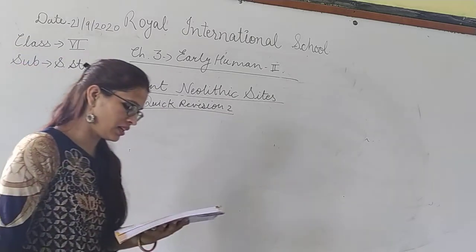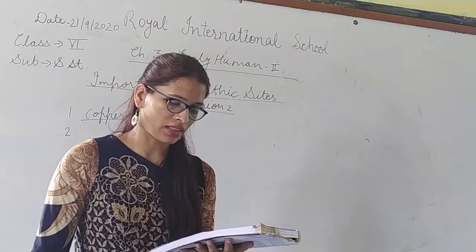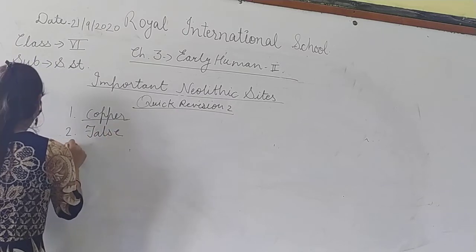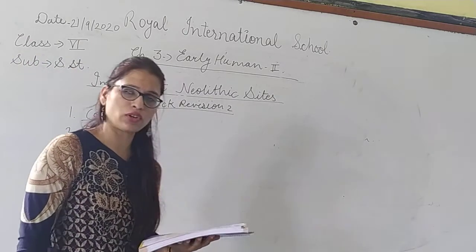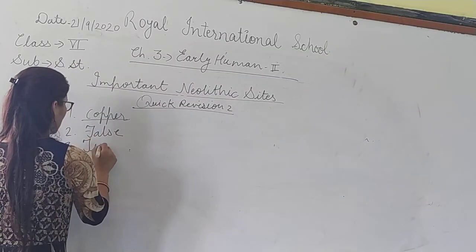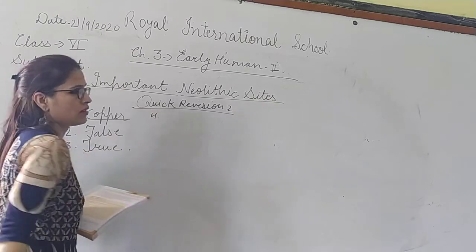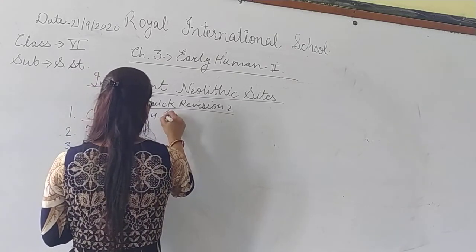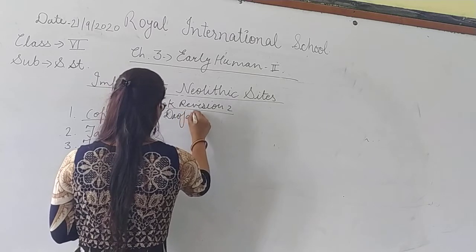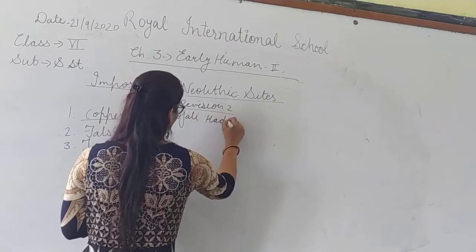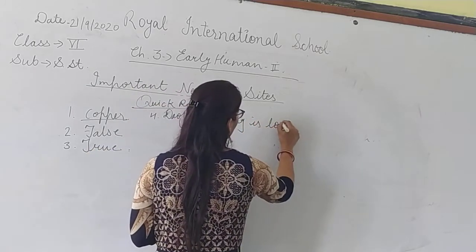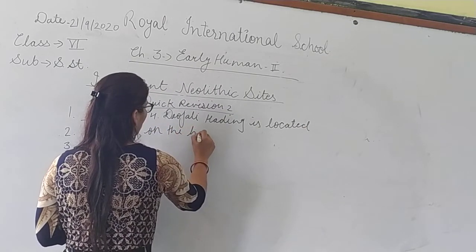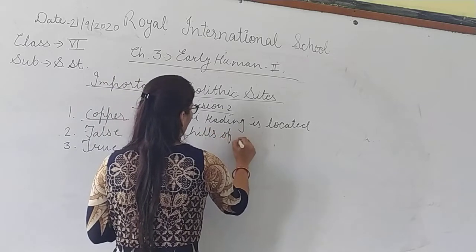Question 2: Daojali Hading is situated near Lansdowne in Uttarakhand — this statement is false. It is actually located on the hills of Assam, not Uttarakhand.